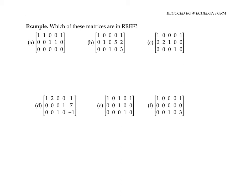Please pause the video and see if you can figure out which of these six matrices are in reduced row echelon form. Matrix A is in reduced row echelon form: it has a leading one in every row that's not entirely zeros, the ones are in descending order, above each leading one there is a column of zeros, and the all-zero rows are at the bottom. Matrix B is also in reduced row echelon form.